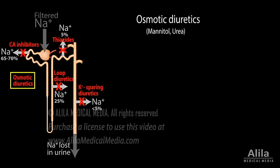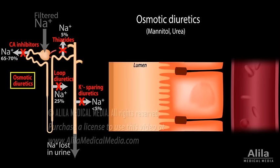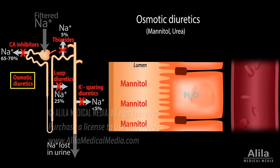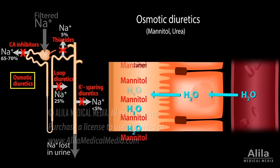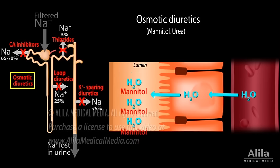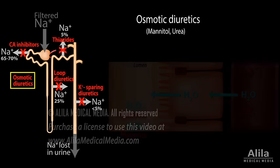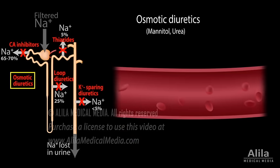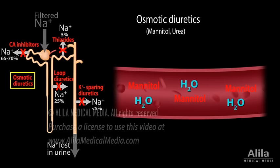Osmotic diuretics, such as mannitol, promote water loss directly through osmosis. Being filtered without subsequent reabsorption, mannitol stays in the renal tubule, creating a higher osmolality which attracts water by osmosis. It produces a greater loss of water compared to sodium and potassium. Mannitol is not usually used to treat edema, because its initial presence in the circulation may actually further increase blood volume to a dangerous level.